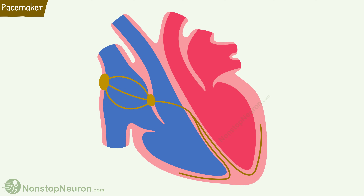Pacemaker is a structure that produces impulses for the heartbeat. Many tissues in the heart can do so. These include the SA node, AV node, and Purkinje fibers.